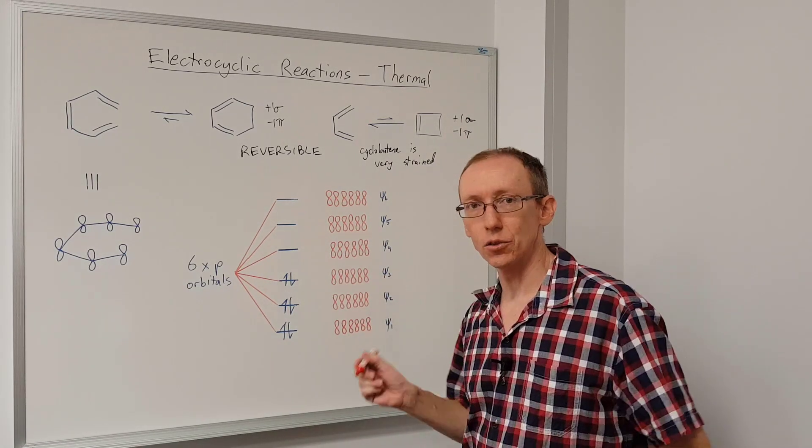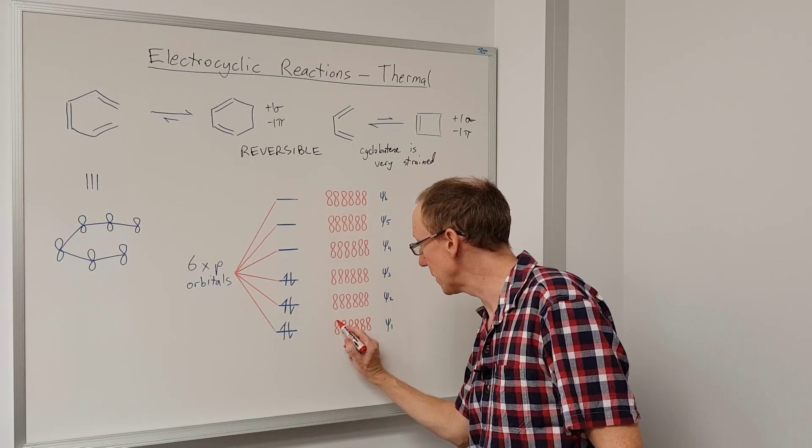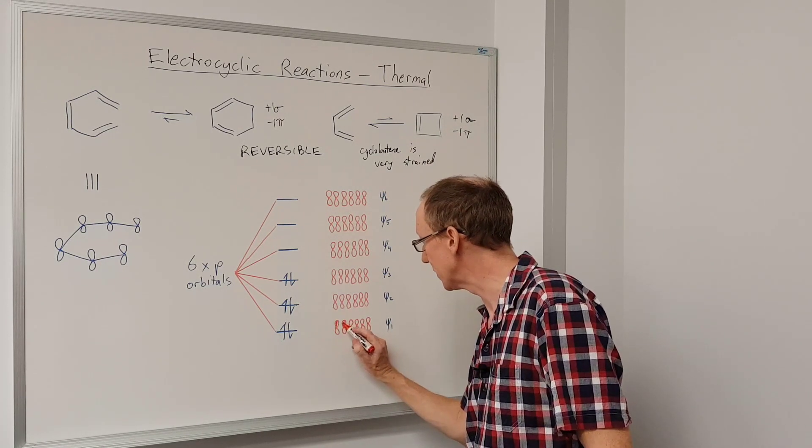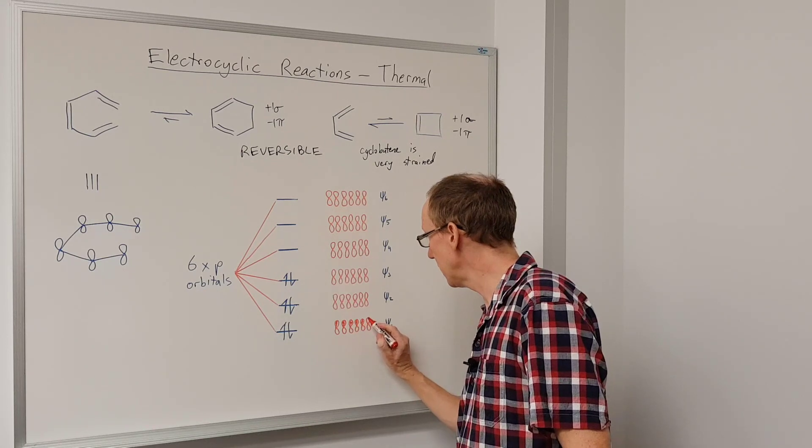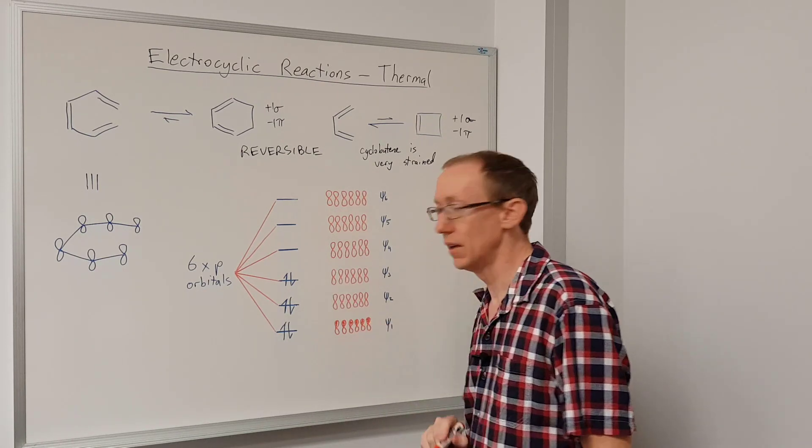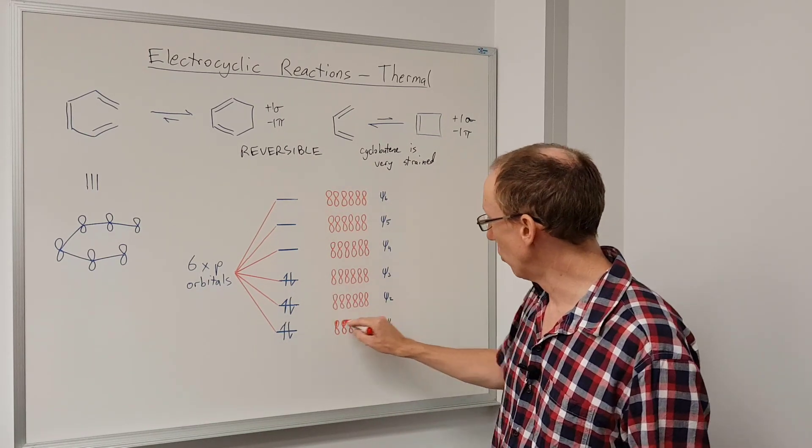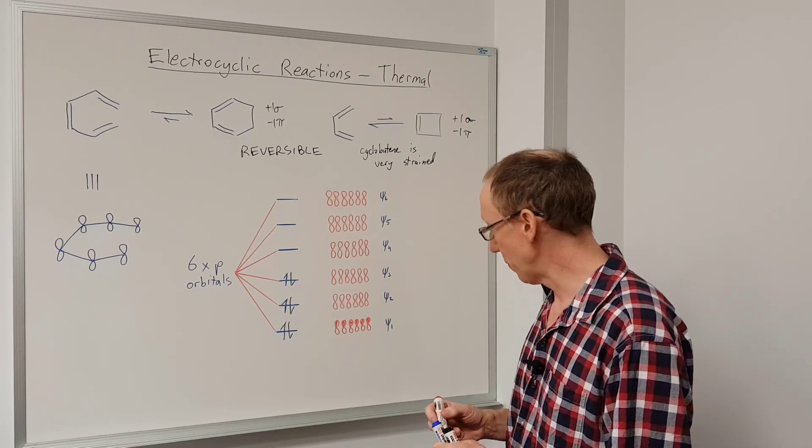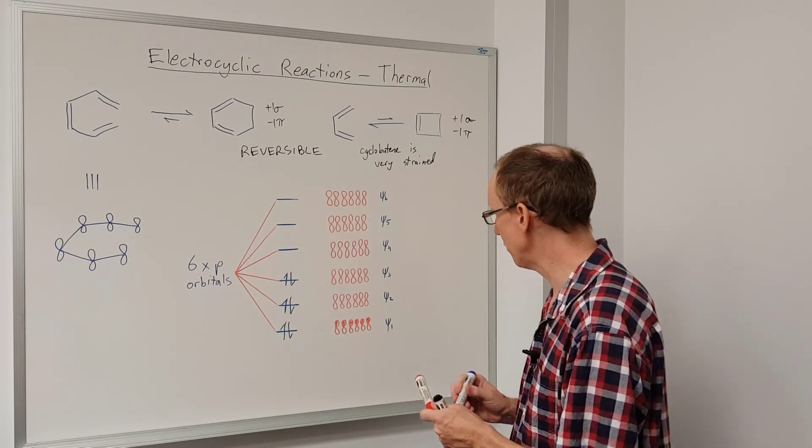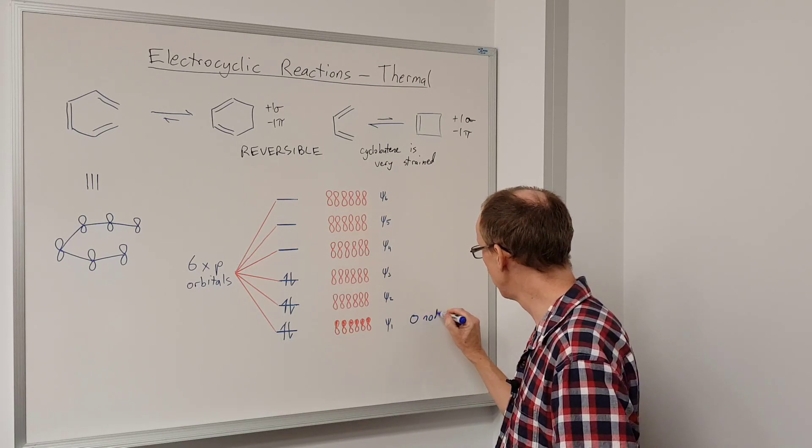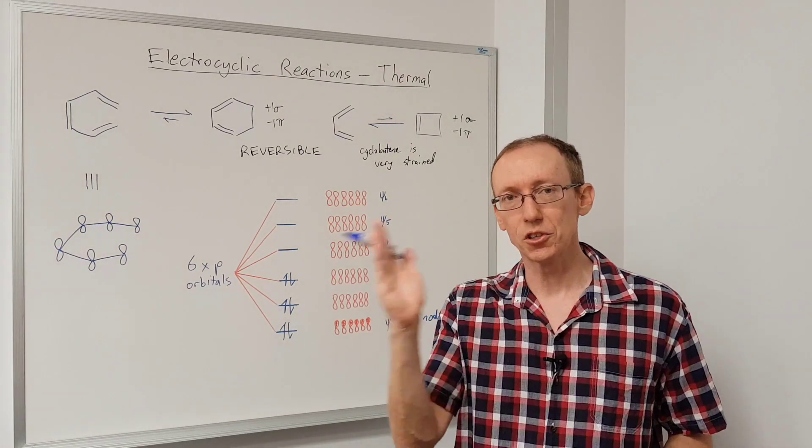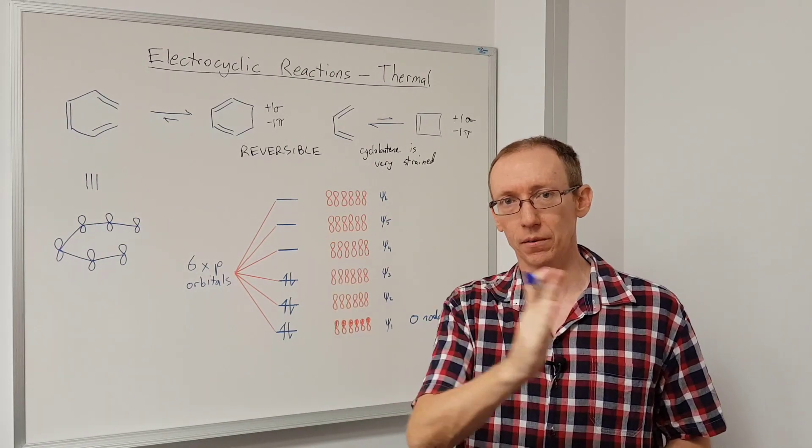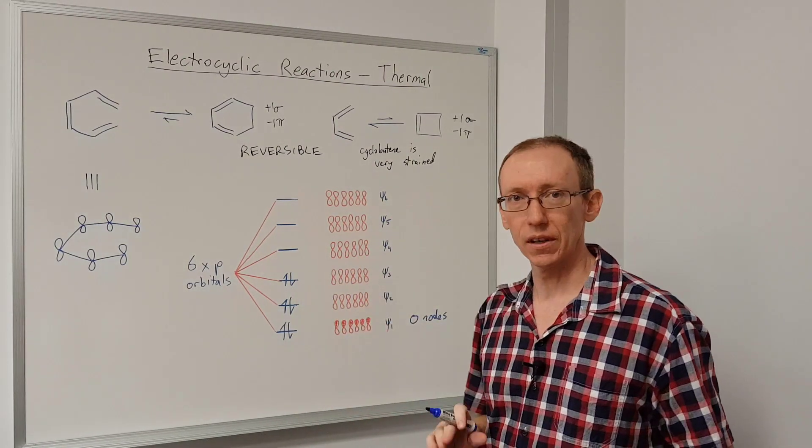So in the case of psi one, it's all constructive overlap. All of the p orbitals are overlapping in phase. We can color one end of the p orbital on each one to show that they're all overlapping in phase. And we would say that that orbital has no nodes, so that has zero nodes. A node is where we have a discontinuity between the overlap of orbitals that are in phase.